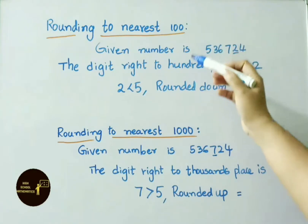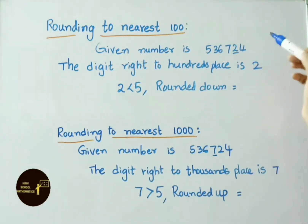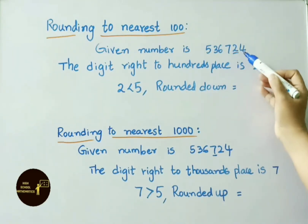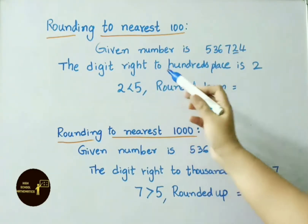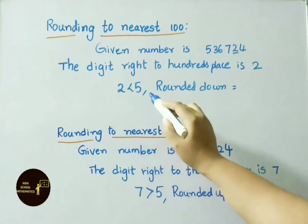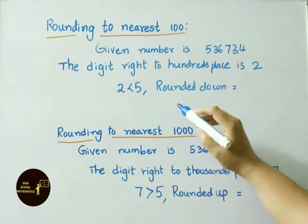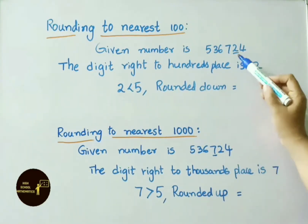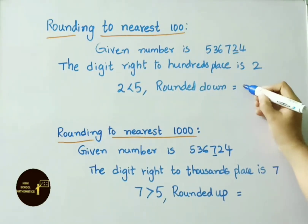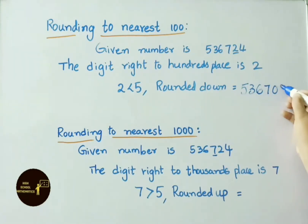Rounding to nearest 100. Given number is 5,36,724. We have to find the nearest 100s, so we look at the digit to the right of the 100s place — that is 2. Check that value: 2 is less than 5, so we round it down. That means we make the last two digits 24 into 00. So the answer is 5,36,700.